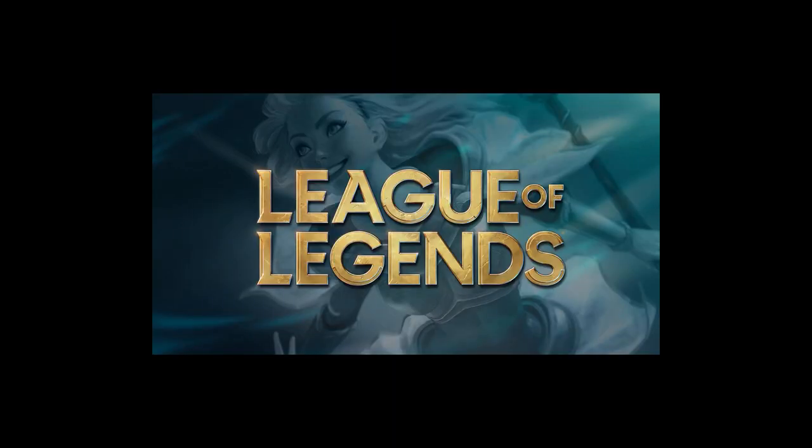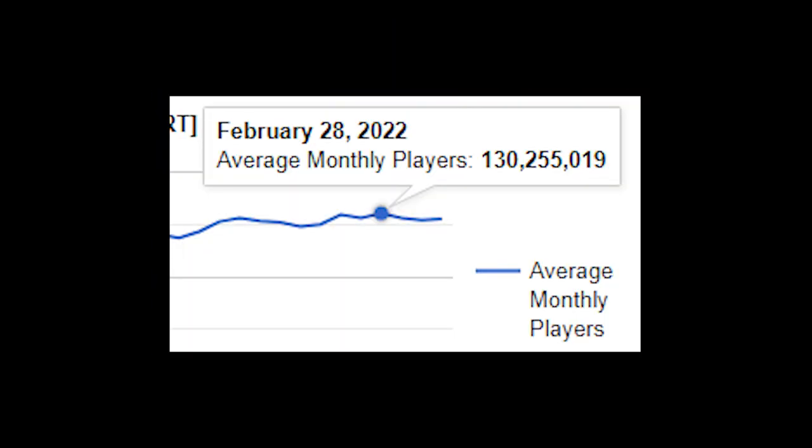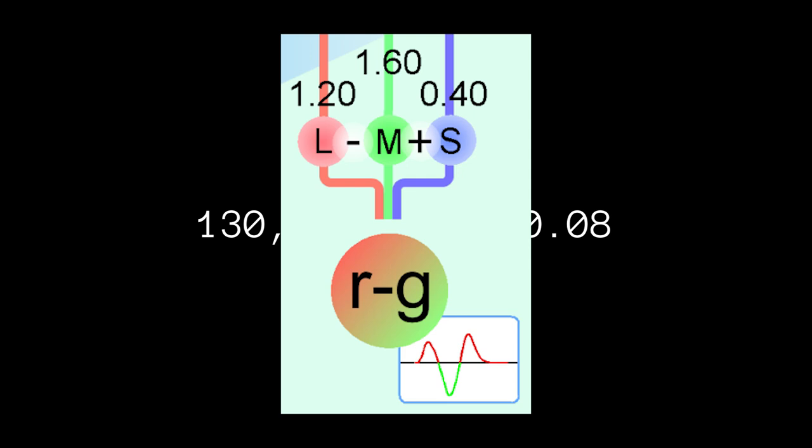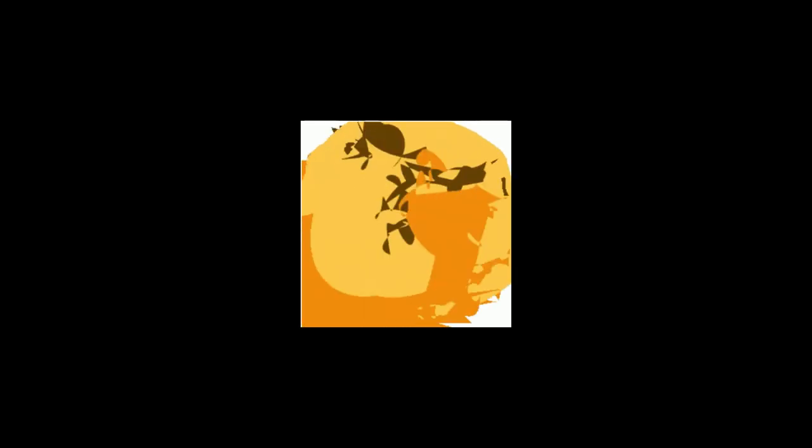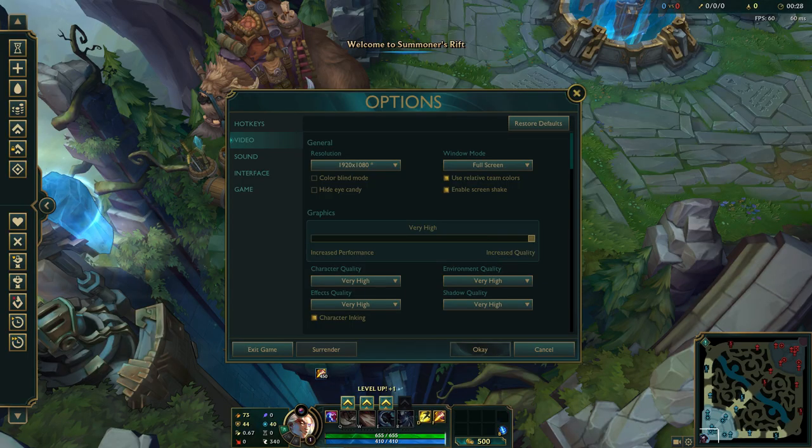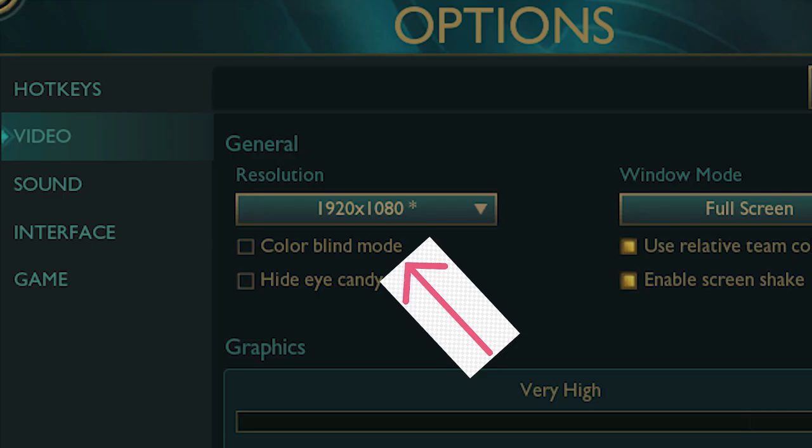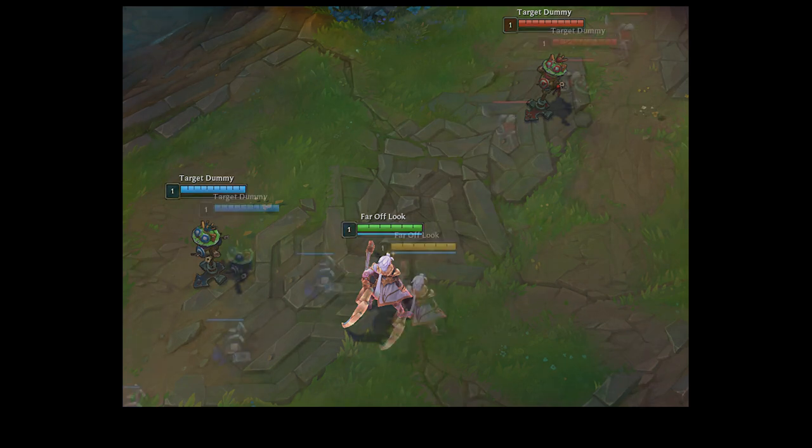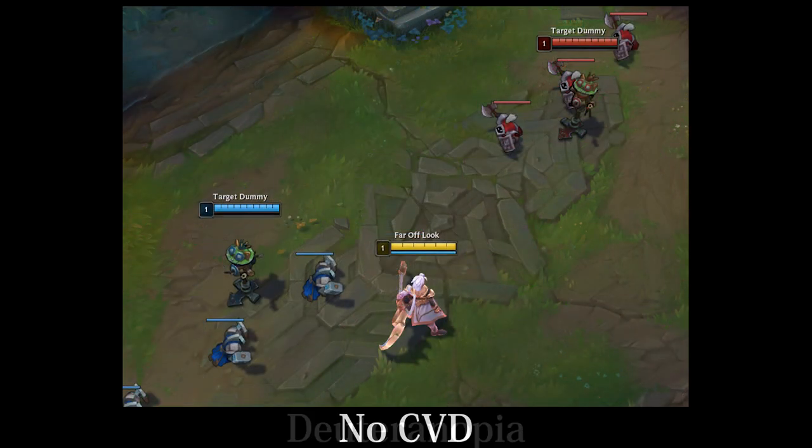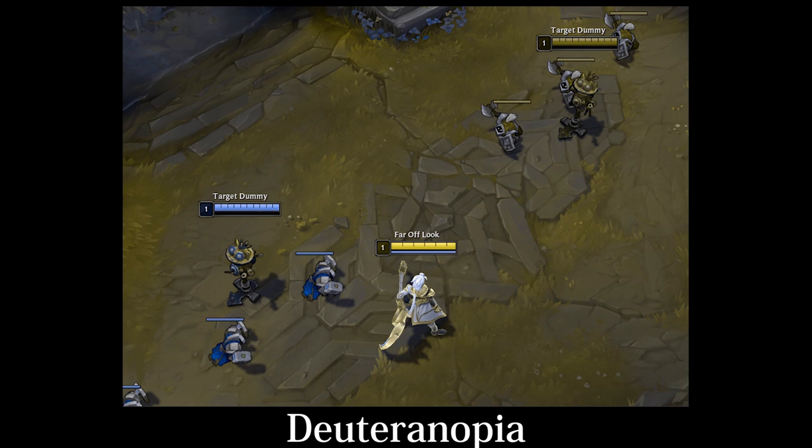Now, League of Legends averages 130 million monthly players, and if we assume 8% of them have some form of red-green colorblindness, then about 10.4 million players will be at a disadvantage, which is quite a lot. Thankfully, League of Legends provides a colorblind mode in the options which changes ally health bars to bright yellow when enabled. This allows colorblind players to differentiate allies from enemies based on brightness instead of hue.